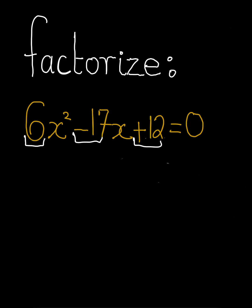So, we go ahead and we write 6x squared minus the first one, 9x, minus the second one, 8x, plus 12 equals to 0.